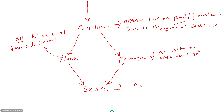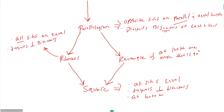For a square: all sides are equal, diagonals are perpendicular bisectors, and all angles are 90 degrees — but we just need to know at least one angle is 90 degrees to confirm the rest. So if you have a rhombus and find out one angle is 90 degrees, that rhombus is now a square. And if you have a rectangle whose diagonals are perpendicular bisectors of each other, that rectangle is also a square.